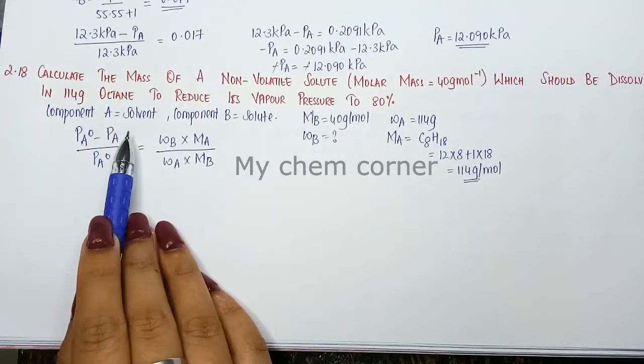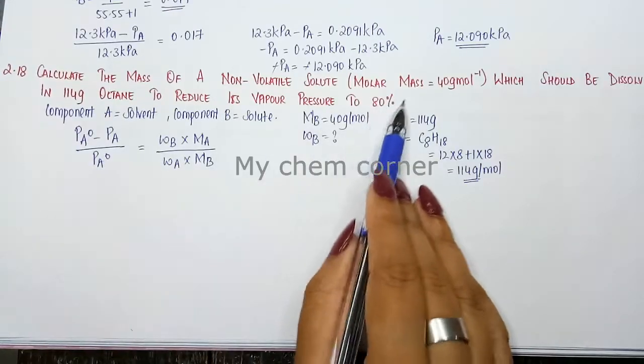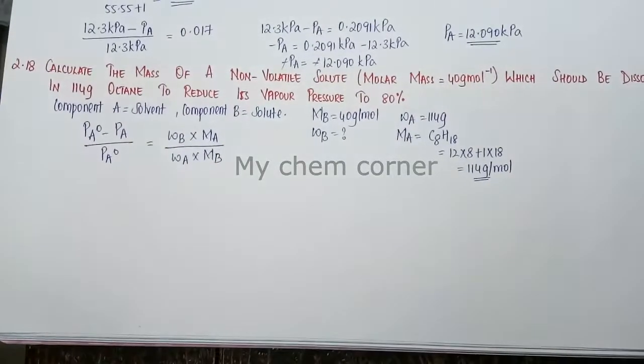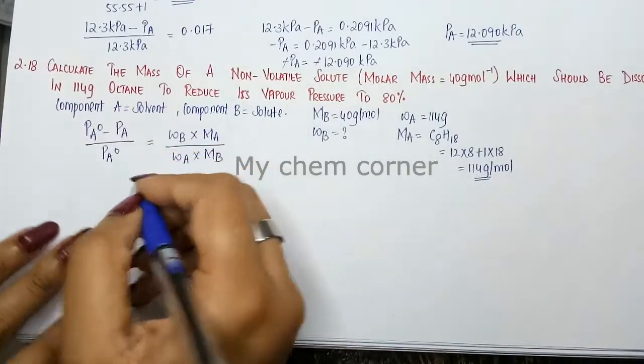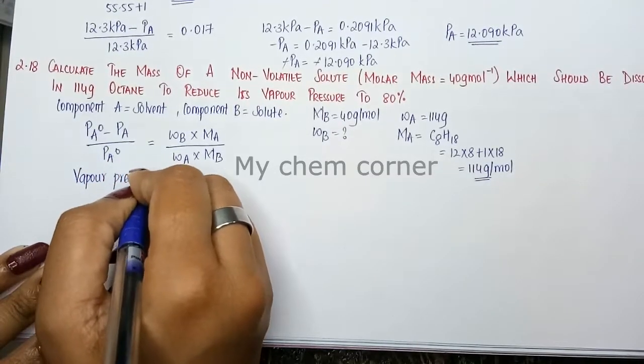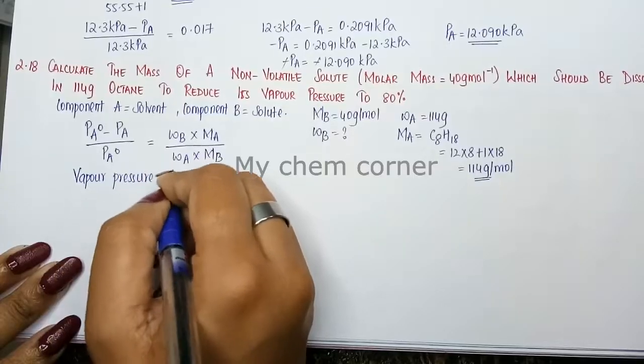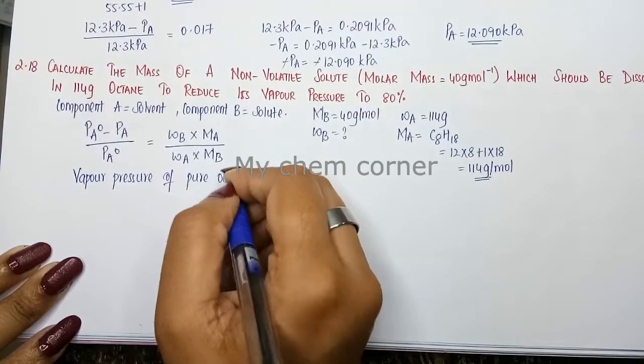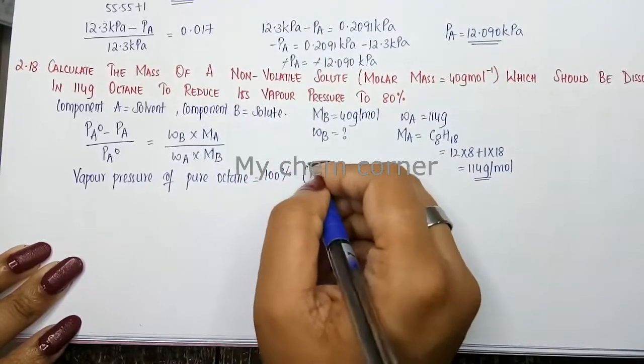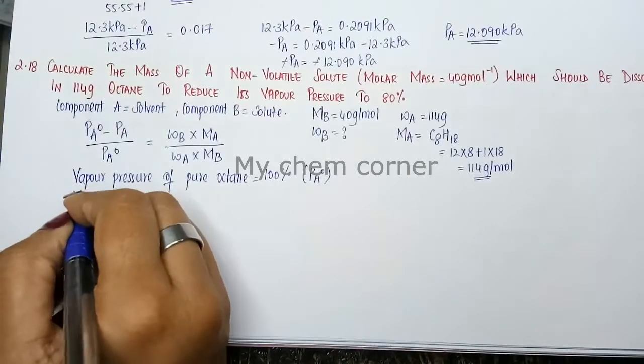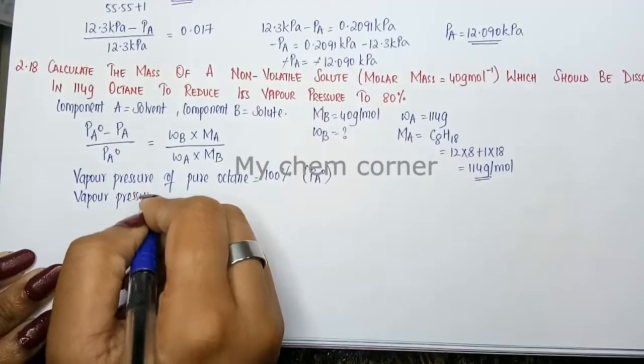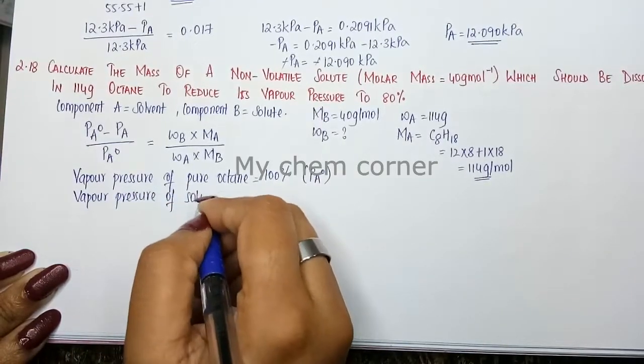Then we have pressures PA0 and PA. It's only given as 80%, so we can write vapor pressure of pure octane - we will take pure octane as 100%, this is the PA0 value. Then vapor pressure of solution - after you make a solution, the vapor pressure will reduce to 80%, so that's going to be the PA value.